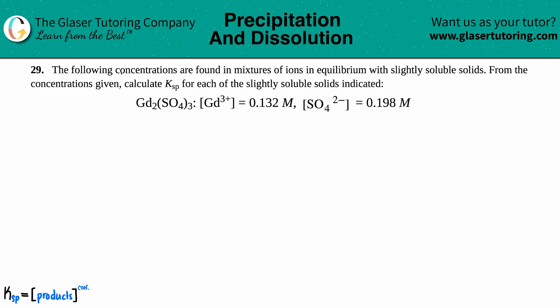Number 29. The following concentrations are found in mixtures of ions in equilibrium with slightly soluble solids. From the concentrations given, calculate the Ksp for each of the slightly soluble solids indicated. So we have Gd2(SO4)3, that's the slightly soluble solid, but it's a solid nonetheless, and it's going to produce its two ions.